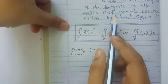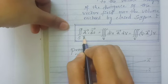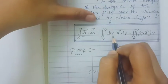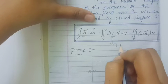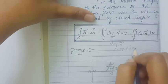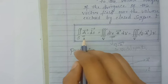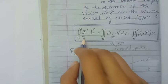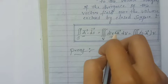So what Gauss Divergence Theorem basically says is: the surface integral of a vector A is equal to the volume integral of the divergence of A. We know what is meant by divergence of A — divergence of A represents del dot A, where del represents the del operator.